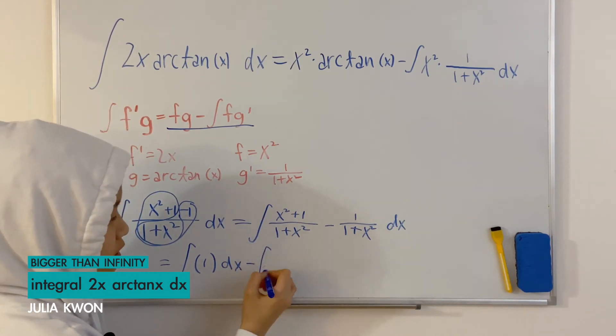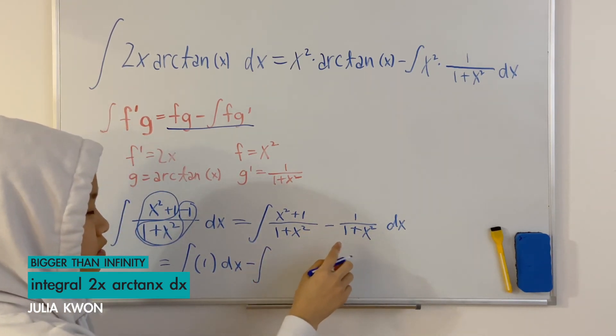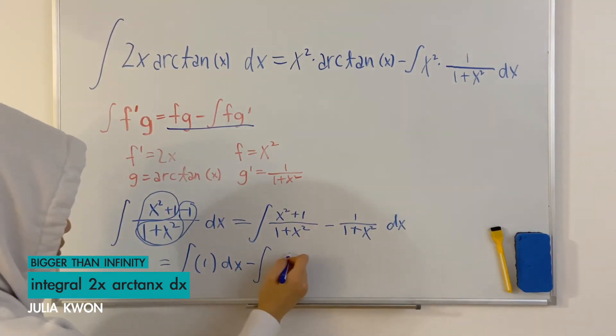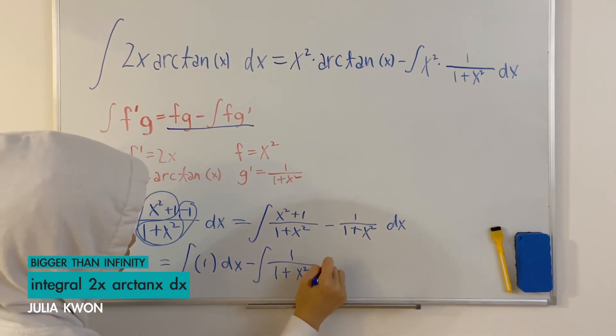I'm going to separate these two so that we would have two different integrals and 1 over 1 plus x squared dx.